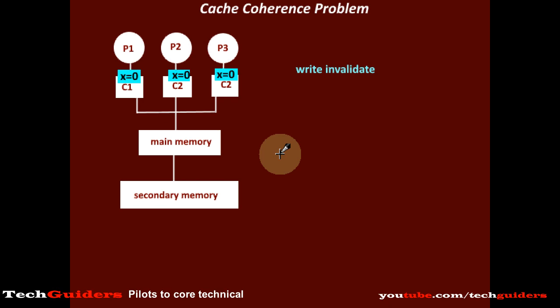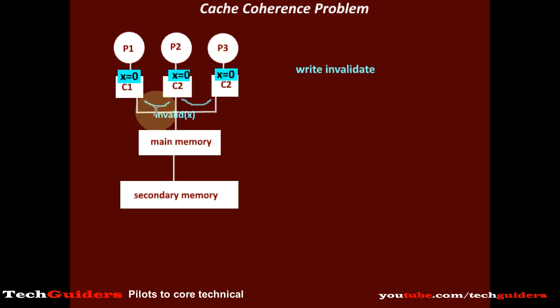In write-invalidate, the processor who wishes to write to some shared data in its local cache will send an invalidation signal to all other local caches. Instead of sending the updated value, it sends an invalidation signal. Any other local cache having this shared location will mark it as invalid and never use it. Once all the copies are invalidated, the changes are made to it by the processor.